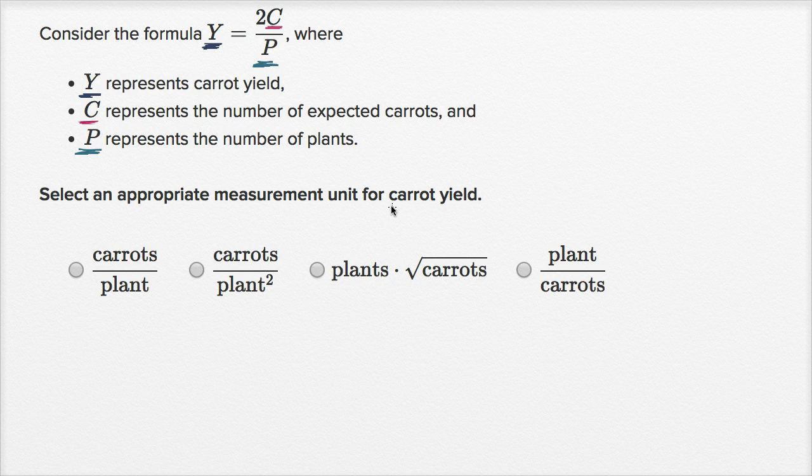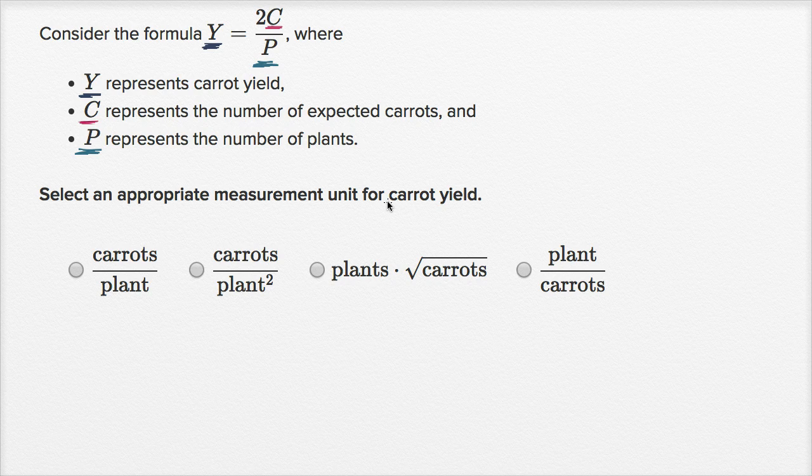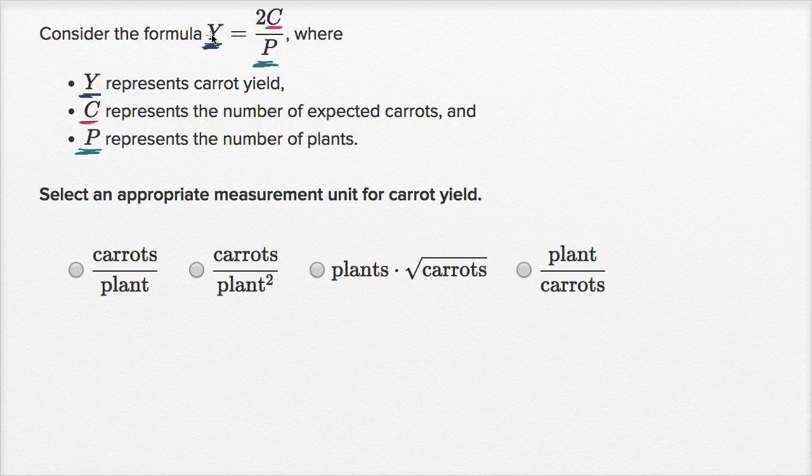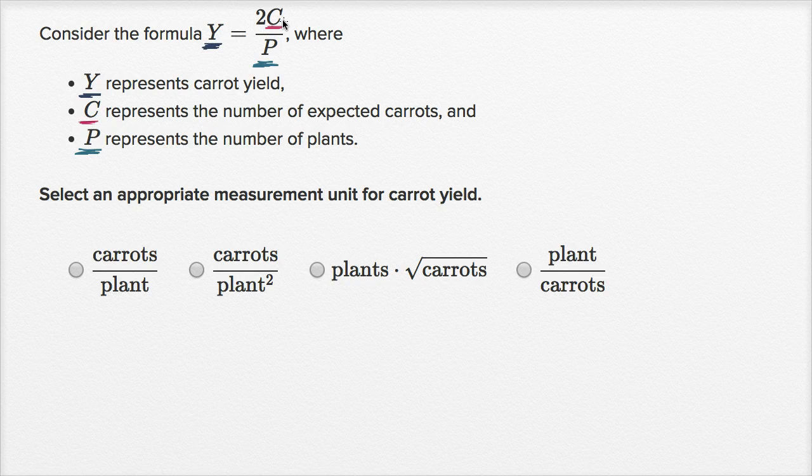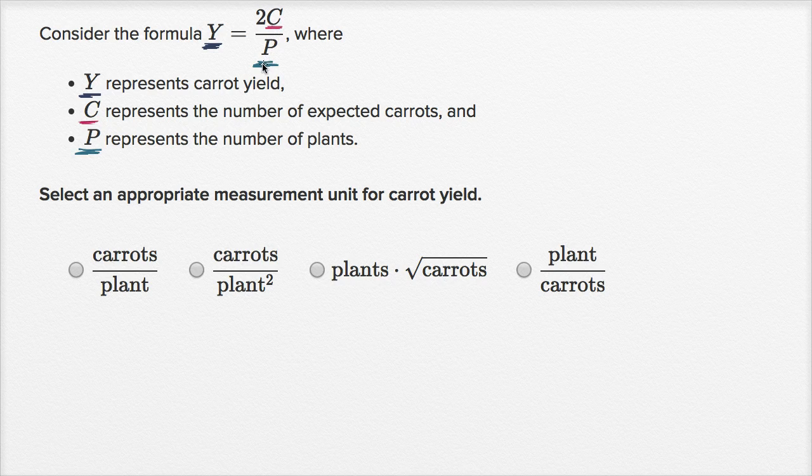So the key here is to realize that we can treat units like we would treat algebraic variables. And so for example, over here, if we're saying our yield is going to be two times the number of expected carats divided by the number of plants, well, our units are going to be, well actually, we could put some numbers in here just to make something more interesting.